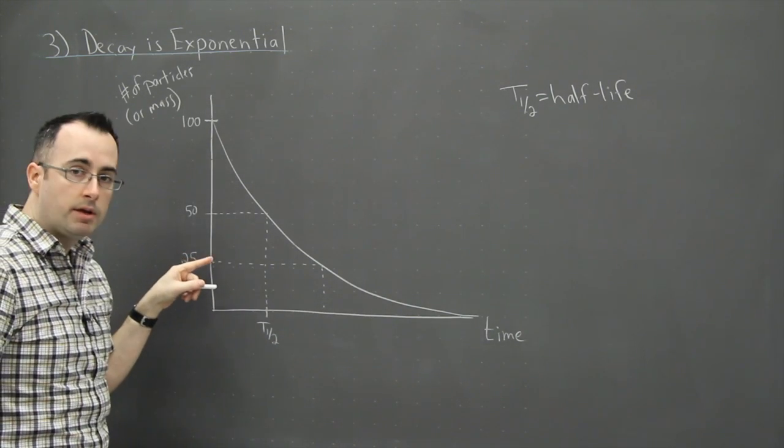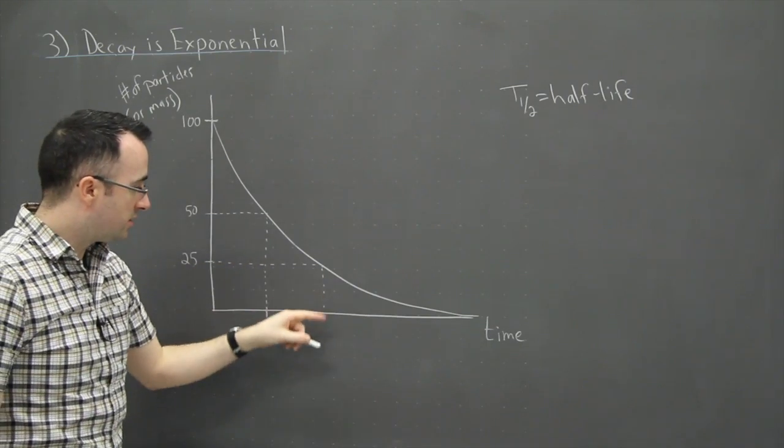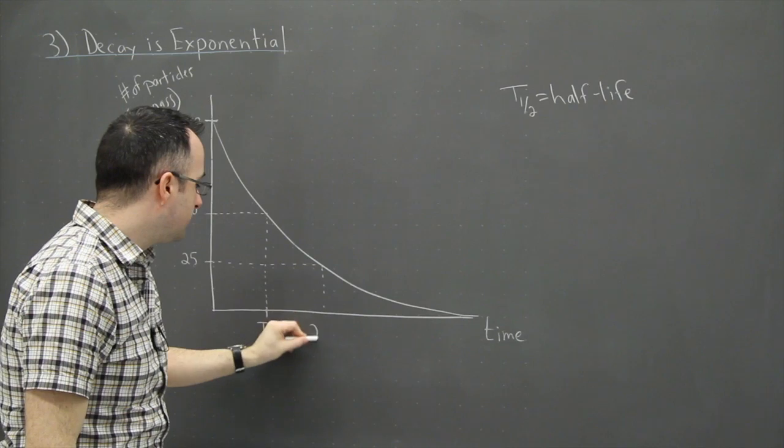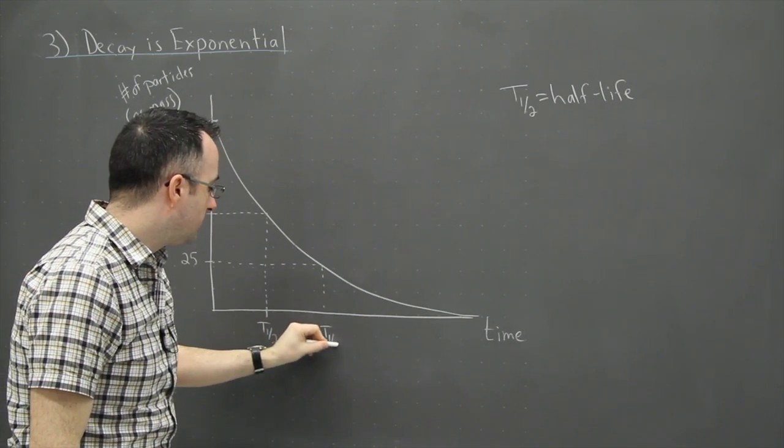When we get 25 grams of this material here, then this right here is going to be the time. That's after two times of going down by a half. So in that case, this is two times t one-half.